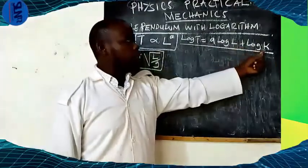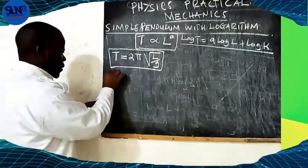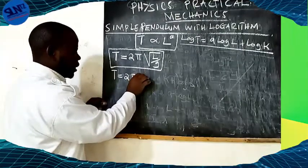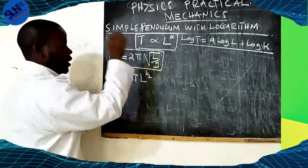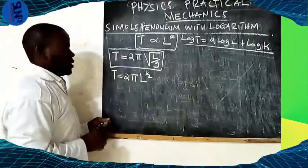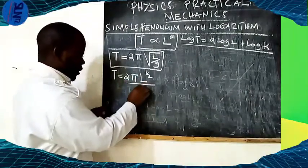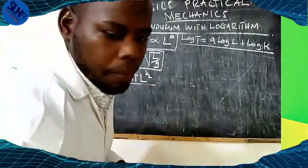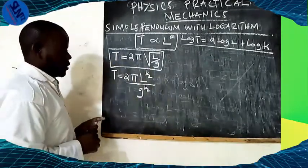We want to find the value of A and the value of K. In the standard form, T equals 2π times the square root of L over g, which can be written as T equals 2π times L to the power of 0.5 divided by g to the power of 0.5.